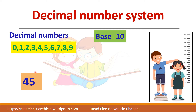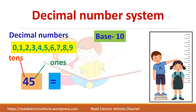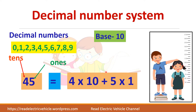For example, let us take the number 45. This is a decimal number. If you see a decimal number, each position of the digit has a different value. Here it is a two-digit number: 4 and 5. So 5 is in the 1's position and 4 is in the 10's position. This means 45 can be written as 4 into 10 plus 5 into 1, which equals 40 plus 5.